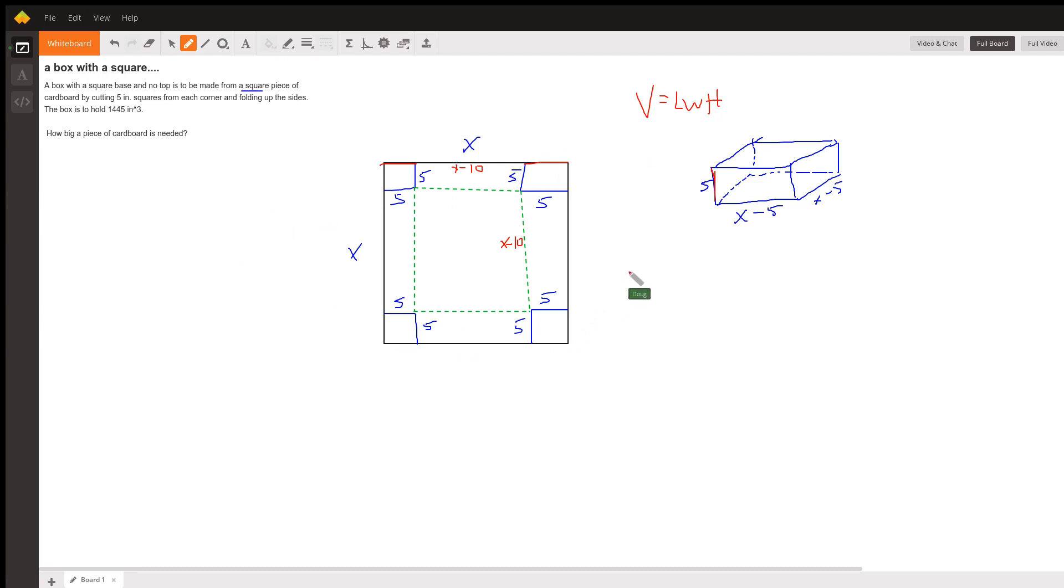But we're told that the volume is 1445 cubic inches, so we can say X minus 5. Whoops. I said X minus 5, sorry. It should be X minus 10.